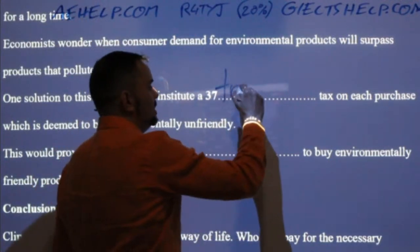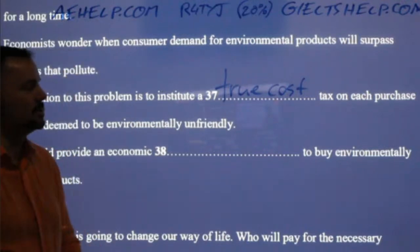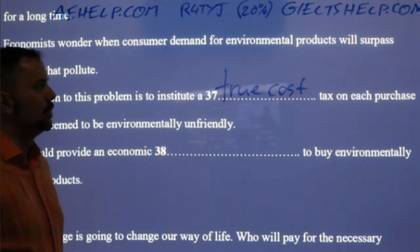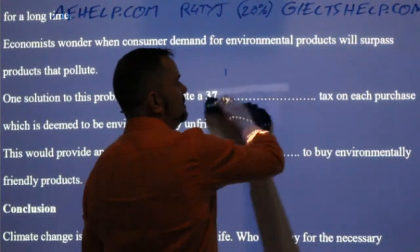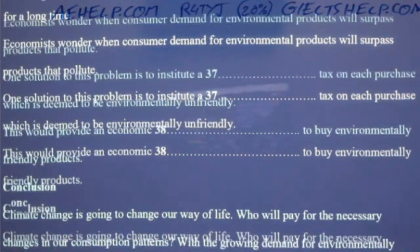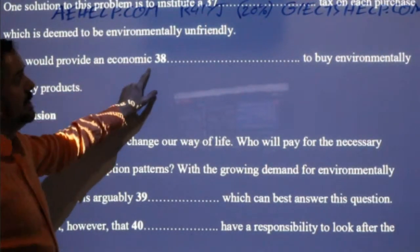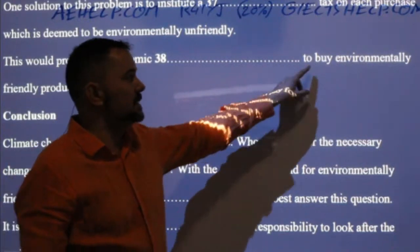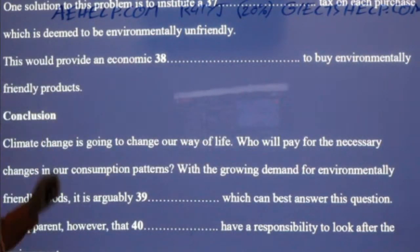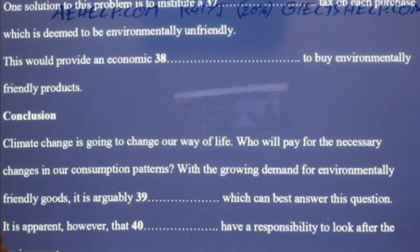True cost — it's a true cost tax. So the real price of products. True cost tax: very good. This would provide an economic pressure to buy environmentally friendly products. Vibhav Thakur says that should be 'pressure' — yes, of course: economic pressure.